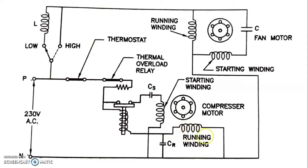We have two windings: a running winding and an auxiliary or starting winding. We have two capacitors — one is a running capacitor and one is a starting capacitor. The running capacitor permanently remains in the circuit, while the starting capacitor and starting winding are disconnected from the circuit once the motor picks up to maximum speed.